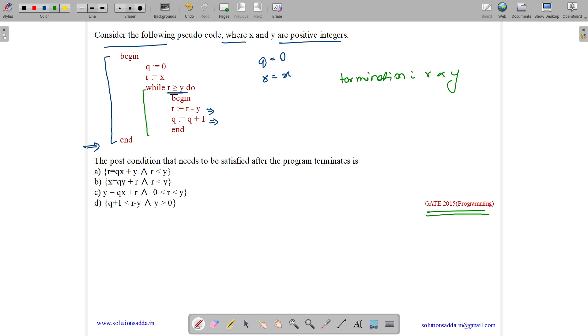How many times will it run? We are decrementing r by y each time, which means if r is 10 and we are decrementing it by 3 each time, then it will run r by y times. But the value of r is initially x, which means it will run x by y times. So loop runs x by y times.